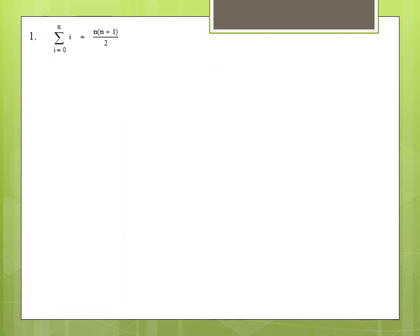Take the example of the sum of the first n integers. Their sum can be written as n times n plus one over two. We need a formal proof for this — let's use Mathematical Induction. First, let's start with the basis case. Let's use zero. The sum of zero is zero. Zero times zero plus one over two is equal to zero.